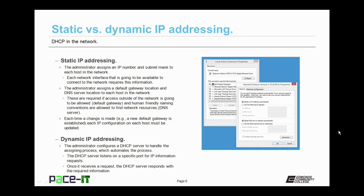Let's talk a little bit more about static IP addressing. The administrator assigns an IP number and subnet mask to each host in the network, whether it be a PC, router, or some other piece of electronic equipment. Each network interface that is going to be available to connect to the network requires this information. The administrator also assigns a default gateway location and DNS server location to each host in the network. These settings are required if access to outside networks is going to be allowed — that would be through the default gateway — and if human-friendly naming conventions are going to be allowed, that would be through a DNS server.